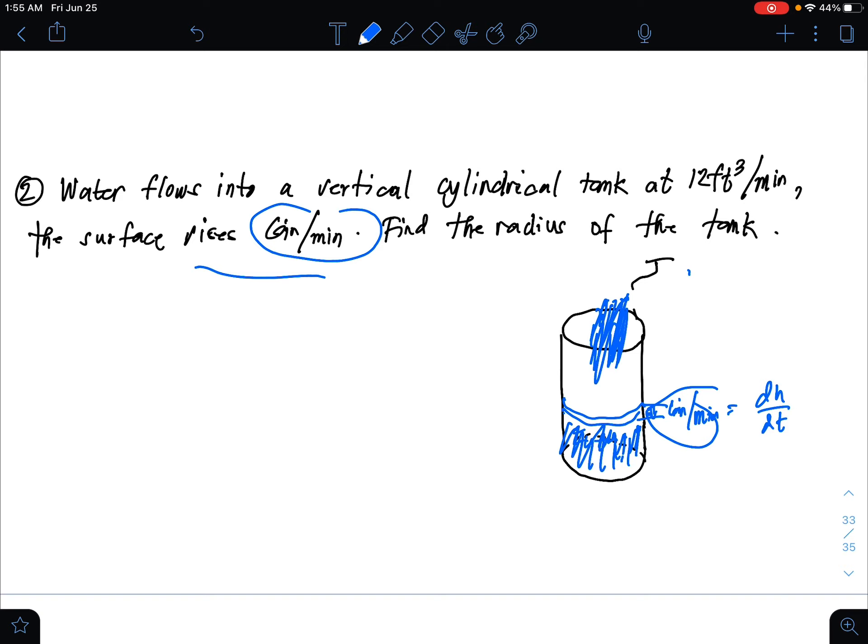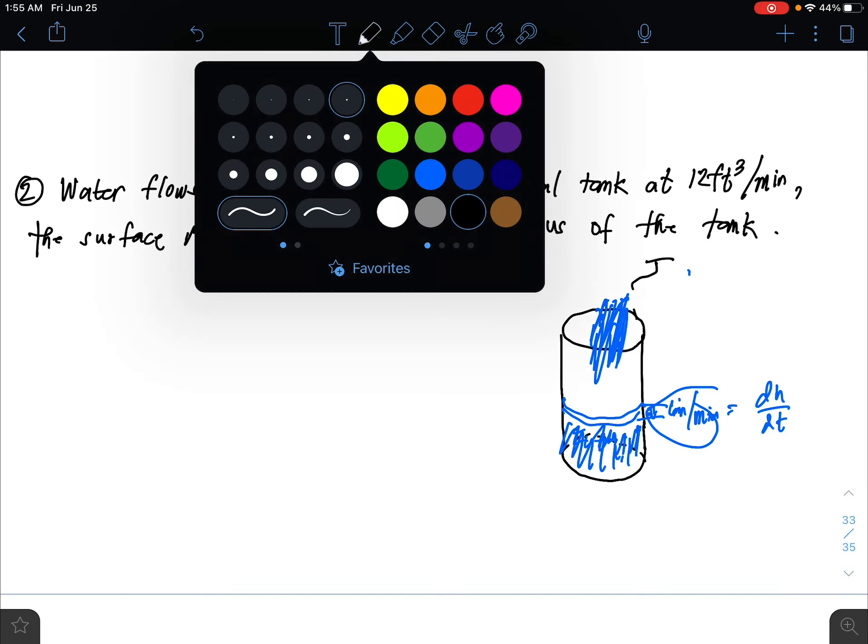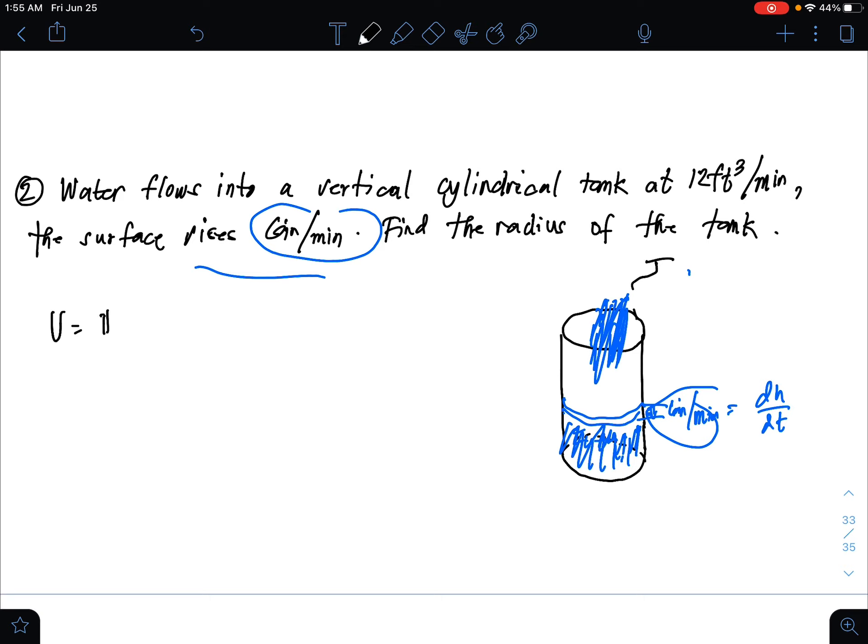What we're looking for is the radius. So with the equation of the volume of the cylinder, which is V equals pi r squared h.